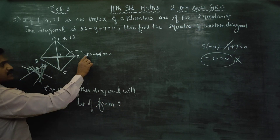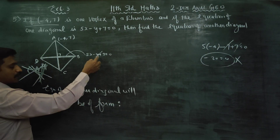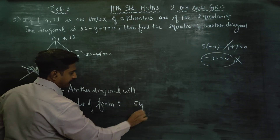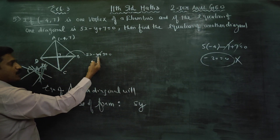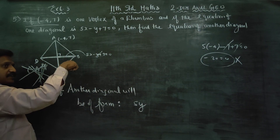The x coefficient and y coefficient swap for a perpendicular line. The original diagonal had coefficient 5 for x and minus 1 for y. For the perpendicular diagonal: x coefficient becomes 1 and y coefficient becomes 5.